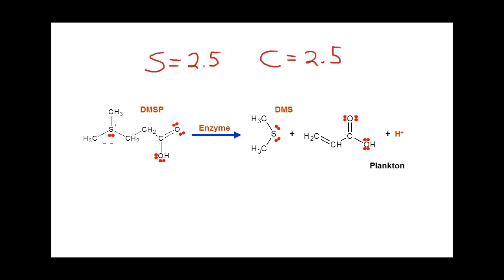Let me illustrate this for sulfur. I'm going to take these bonded electrons and divide them equally between sulfur and carbon. I take the original valence electron count for sulfur, which is 6, minus the number of electrons it has after the bond cutting approach: the lone pairs plus one electron from each bond, giving 5 total. So 6 minus 5 means sulfur has a +1 oxidation state in DMSP.